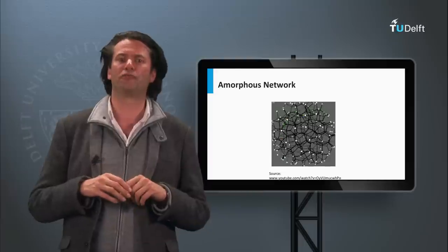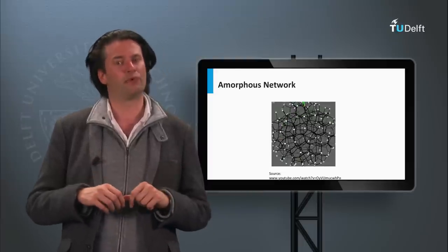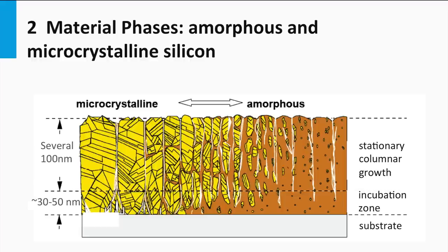Another phase of hydrogenated silicon alloys is the nanocrystalline lattice. This is a heterogeneous material consisting of small grains with a crystalline lattice. These grains are embedded into a tissue of hydrogenated amorphous silicon. Typical grain sizes are in the order of a few tens of nanometers.